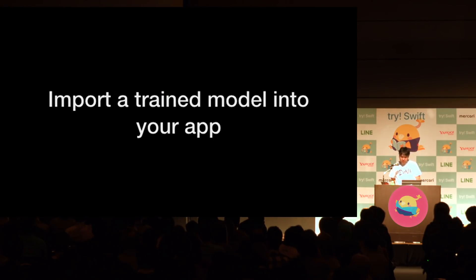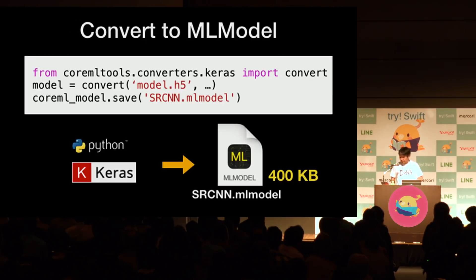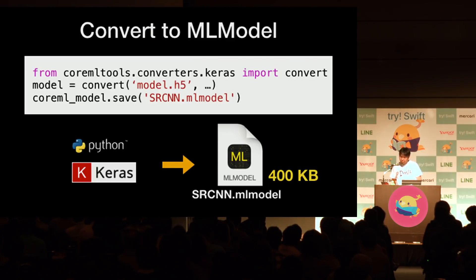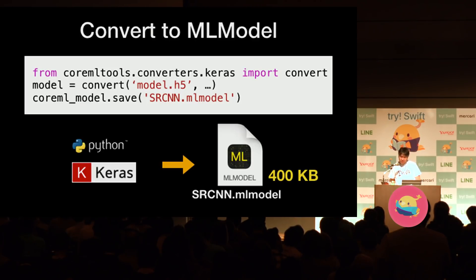Finally, let's import the trained model into your app. To import the model, you have to convert it to a Core ML model format. An important thing is that the ML model file size is just 400 kilobytes — very small. It never increases the binary size of your app.